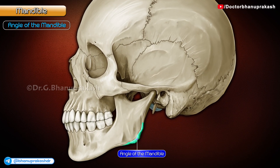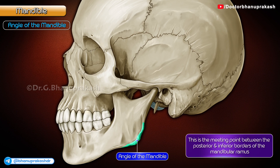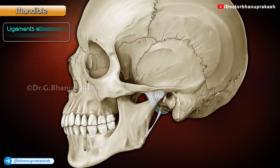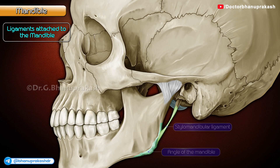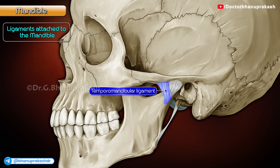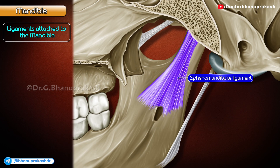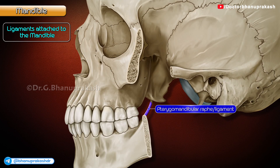Angle of the mandible: this is the meeting point between the posterior and inferior borders of the ramus of the mandible. Ligaments attached to the mandible are as follows: the stylomandibular ligament, attached to the angle of the mandible; the temporomandibular ligament, attached to the lateral aspect of the neck of the mandible; the sphenomandibular ligament, attached to the lingula of the mandible; and the pterygomandibular raphe or ligament, which takes attachment behind the last molar tooth extending till the upper end of the mylohyoid line.